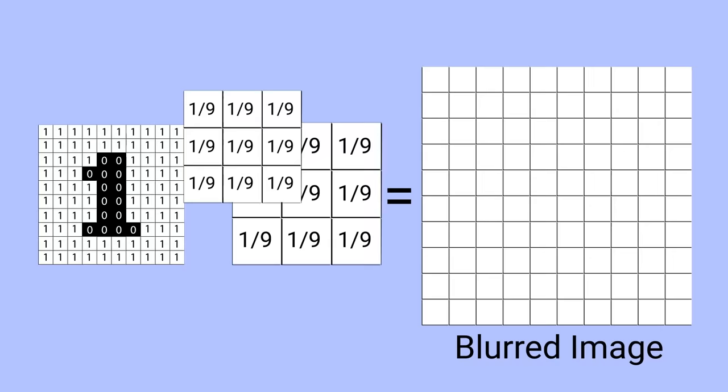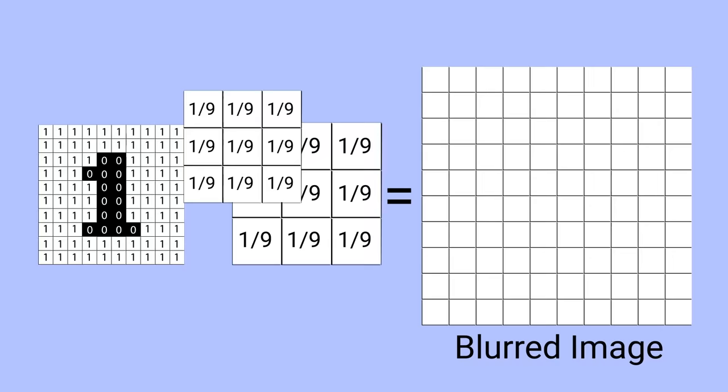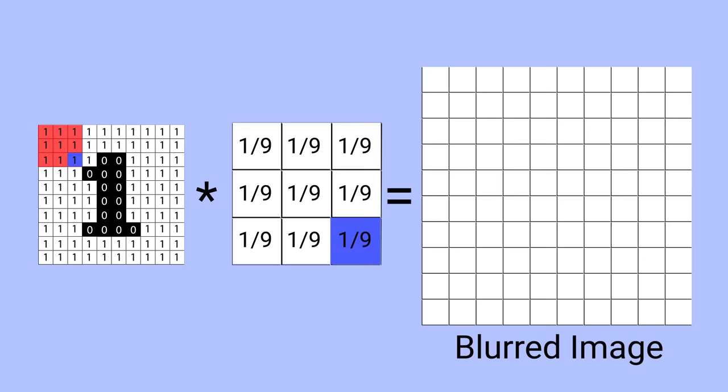To do so I'm going to make a three by three matrix where every entry is one ninth. This is known as a kernel in image processing by the way. Then what we're going to do is lay this kernel over our image matrix and multiply the individual entries in each square together then add the results. In this case it's just one times one ninth nine times so the sum of all those is one. Yes this kernel is really just finding the average of the pixels inside it.